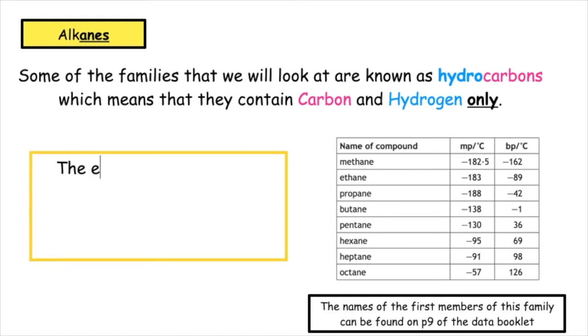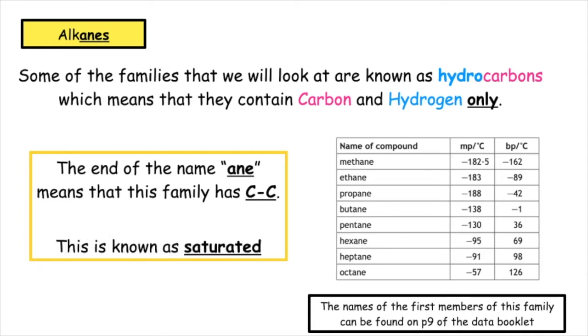The alkanes, the end of the name ends in -ane, which means that this family has carbon to carbon single bonds. This is known as saturated.